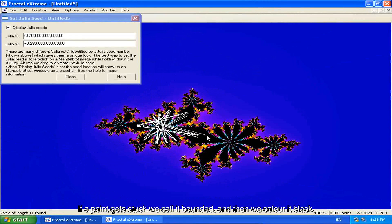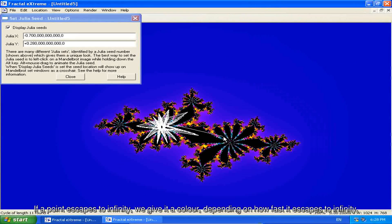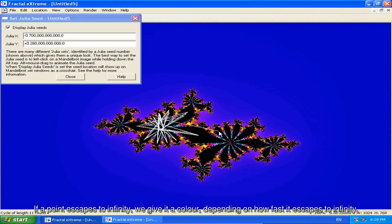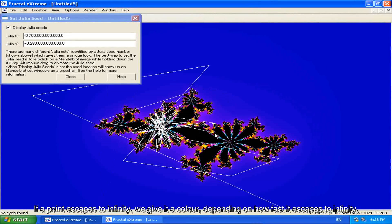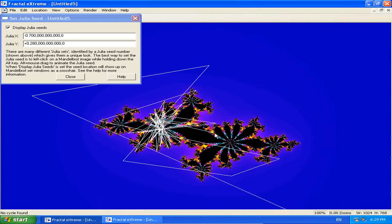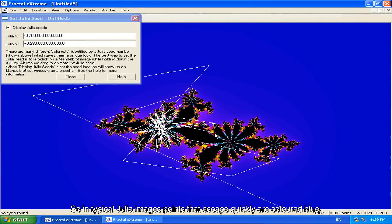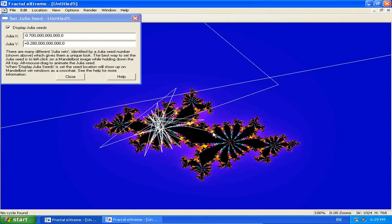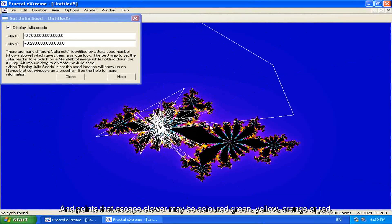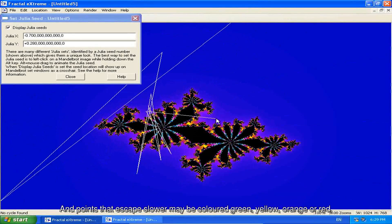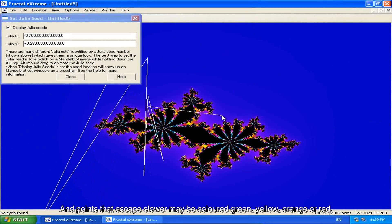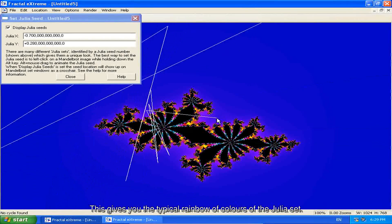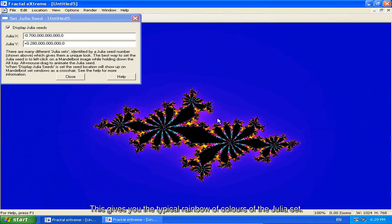If a point gets stuck, we call it bounded and then we color it black. If the point escapes to infinity, we give it a color depending on how fast it escapes to infinity. So in typical Julia images, points that escape quickly are colored blue. And points that escape slower may be colored green, yellow, orange or red. This gives you the typical rainbow of colors of the Julia set.